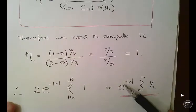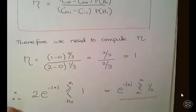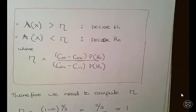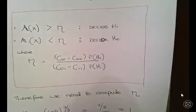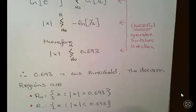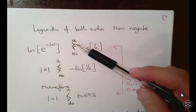So we have e to the minus absolute value of x compared to one half. Now what I'm going to do here is push this on a little bit further, and what we can do is get the logarithm of both sides and then negate.